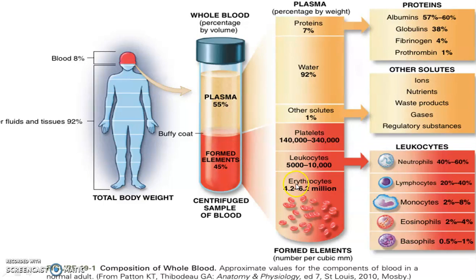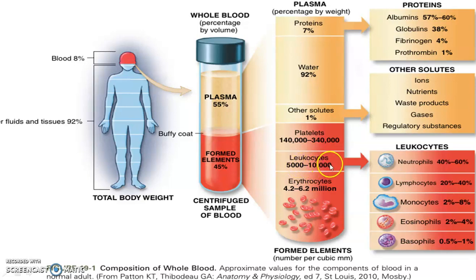The formed elements are RBCs, WBCs, and platelets. RBCs are also called erythrocytes, WBCs are leukocytes, and platelets are thrombocytes. All three are formed from the reticuloendothelial system, which comprises the liver, spleen, and bone marrow. The normal range for RBCs is 4.2 to 6 million cells per cubic millimeter, WBCs are 5,000 to 10,000 cells per cubic millimeter, and platelets are 1 to 3 lakh. WBCs include five types: neutrophils, lymphocytes, monocytes, eosinophils, and basophils.